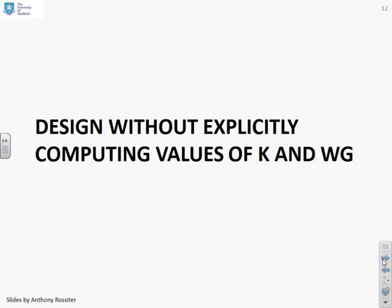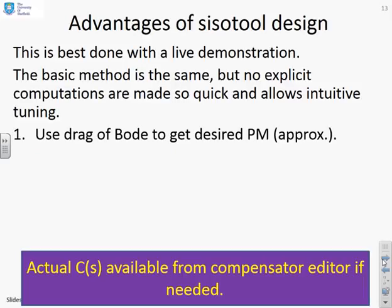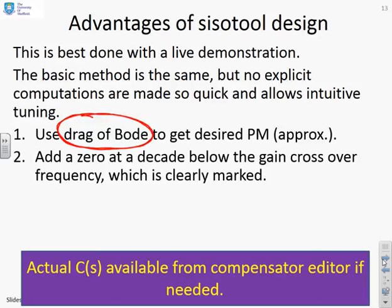How about doing a design without explicitly computing any values for K and omega_g? This is where you get the real benefit of SISOTOOL—I don't have to do any offline computation and writing down K(s) and remembering the numbers. This is how we do it: we'll do a live demonstration, but first we'll give you the basic method. Use drag of Bode to get a desired phase margin—no calculations here, just drag the Bode plot.